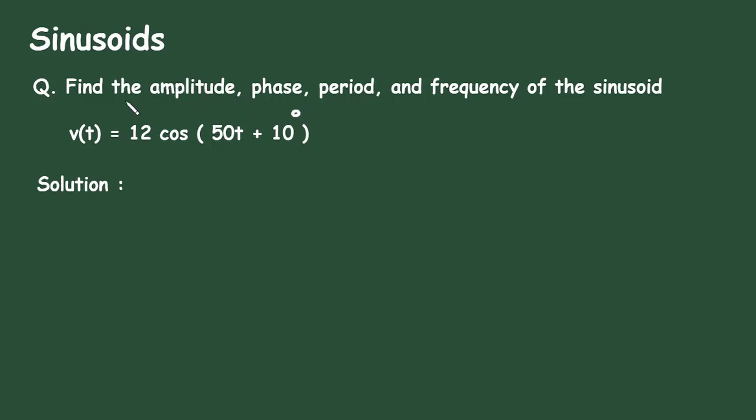In this video we will see an example of sinusoids to find the amplitude, phase, period and frequency of the sinusoid. The equation is V(t) = 12 cos(50t + 10°).